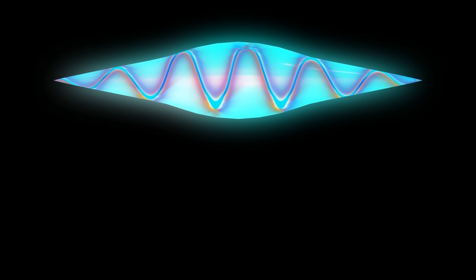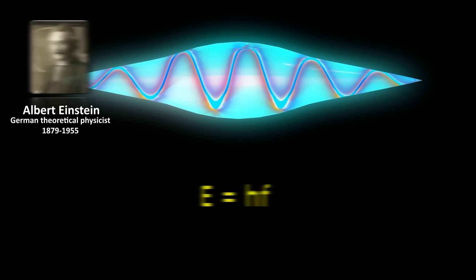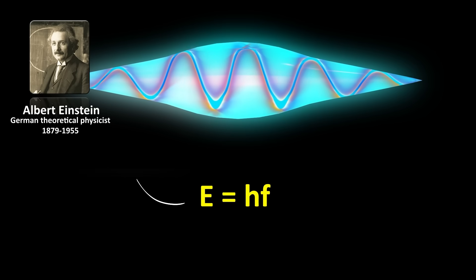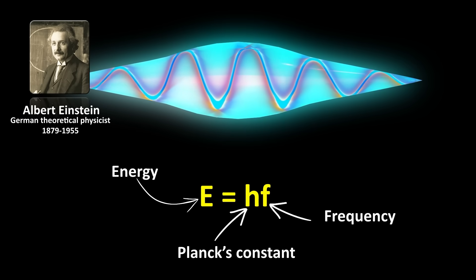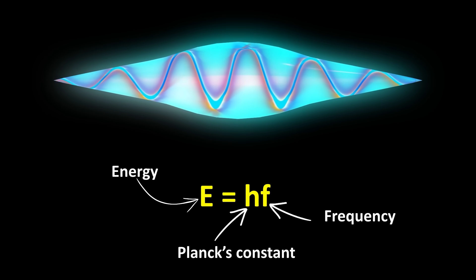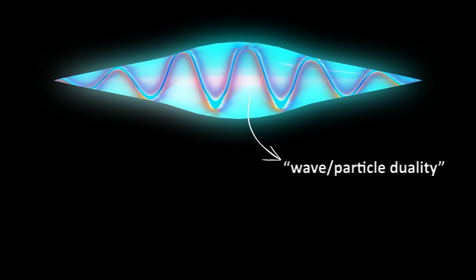What Einstein showed is that the energy of light comes in discrete quanta defined by Planck's equation: energy equals Planck's constant times frequency. In other words, light consists of photons with the energy of each determined by its frequency. So light has characteristics of both waves and particles. Today we call this phenomenon wave-particle duality.